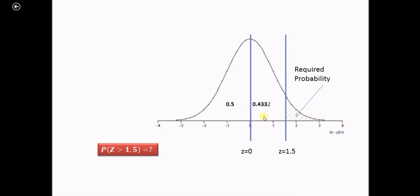So from 1, if we subtract this probability, that is the cumulative normal probability which we have already obtained from the table, then we will get the required probability.